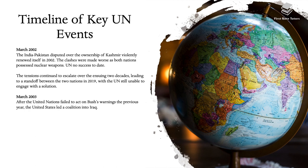The India-Pakistan dispute over the ownership of Kashmir violently renewed itself in 2002. The clashes were made worse as both nations possessed nuclear weapons, and the UN had no success to date. The tensions continued to escalate over the ensuing two decades, leading to a standoff between the two nations in 2019, with the UN still unable to engage with a solution. In March 2003, after the UN failed to act on Bush's warnings the previous year, the United States led a coalition into Iraq.